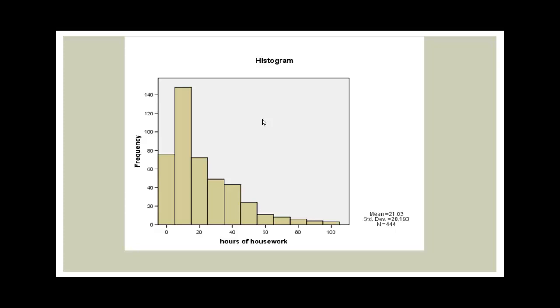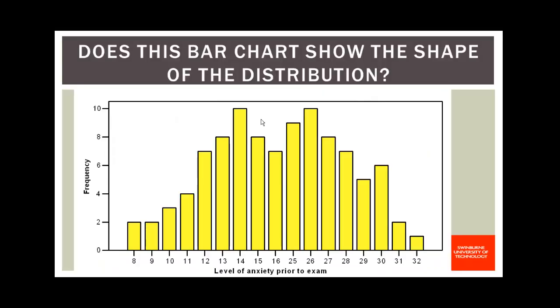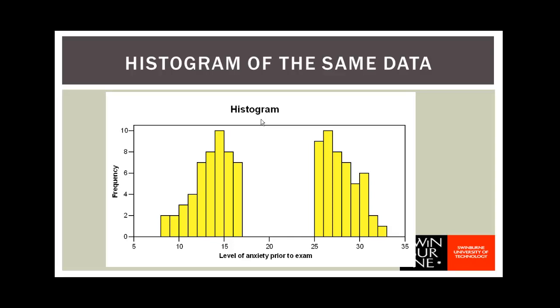So just to emphasize what the differences really are between histograms and bar charts, let's look at one more variable - level of anxiety prior to the exam. If you have a look at the bar chart, it looks like a fairly symmetric kind of distribution. But if you look at a histogram for exactly the same data, you'll see that there's this enormous gap in the middle - there was no one in this data file that had an anxiety score between 17 and 25. So that didn't show up at all on the bar chart, but it's the most interesting feature of this distribution: that people either had very low anxiety or very high anxiety, and there was no one in the middle.